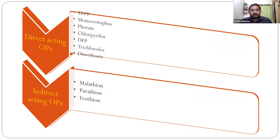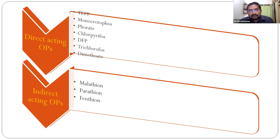Organophosphorus compounds are broadly classified into directly acting and indirectly acting compounds. Directly acting compounds need no activation - they directly affect the target system. Indirectly acting compounds are inactive as such and need activation once they enter the body. Examples of directly acting organophosphorus compounds include tetraethyl pyrophosphate, monocrotophos, forate, chlorpyrifos, DFP, trichlorophosphate, and dimethoate. Commonly, organophosphorus insecticides end with the suffix '-phos'.